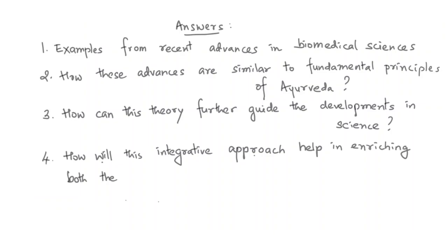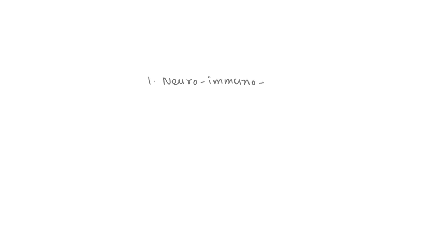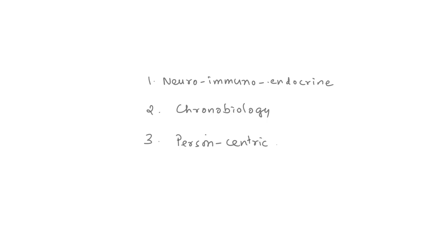I will be taking a few examples. The first example will be from neuro-immunoendocrinology, which I discussed to a certain extent in the last lecture — the neuro-immunoendocrine axis. The second will be related to chronobiology. The third will be from person-centric approaches in medicine. These are the areas from which I will take examples to explain how these advances are important in understanding the importance of Tridosha theory.